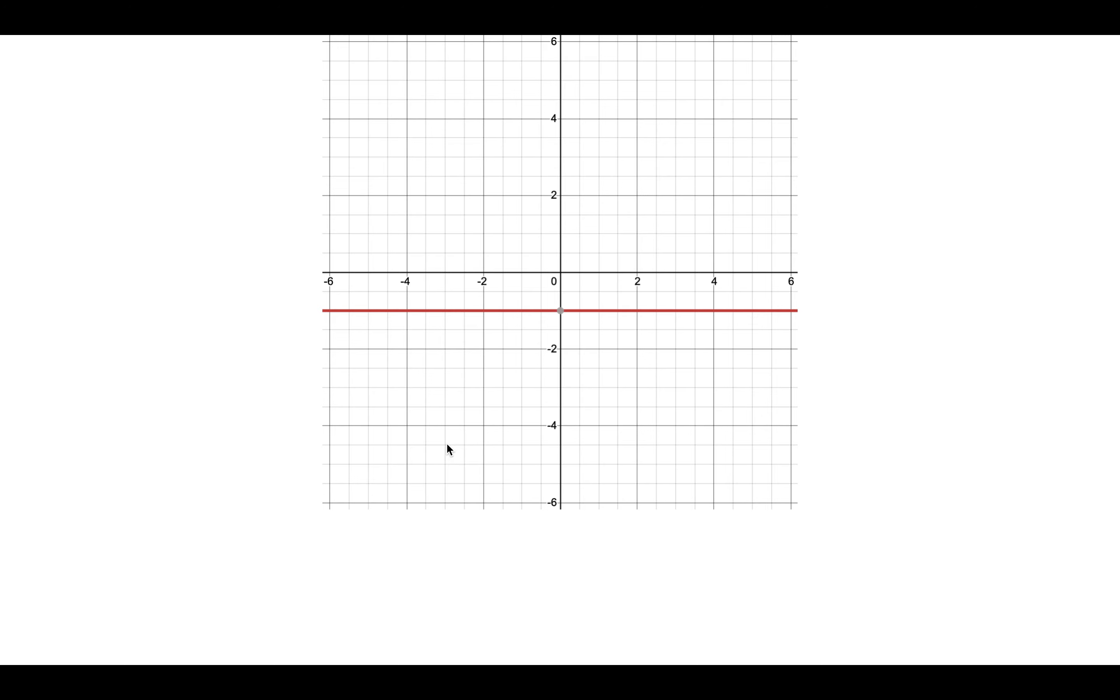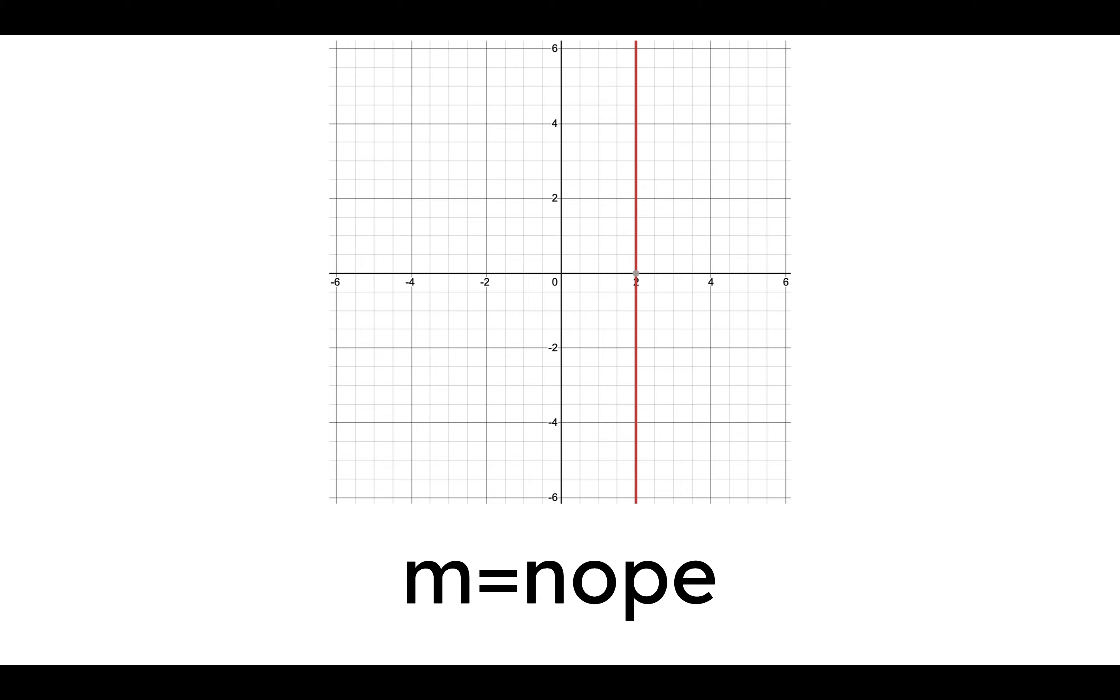If you see a side to side line, it's just a slope of 0. So here, for example, our slope is 0. Here, for example, our slope is nope. Doesn't work. Breaks everything.